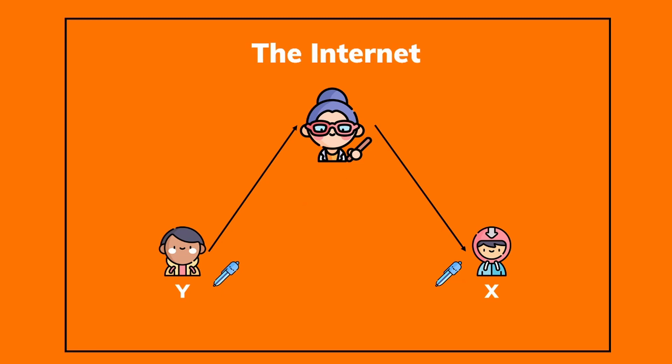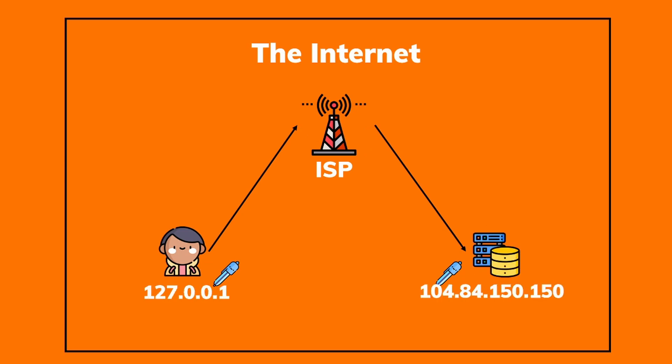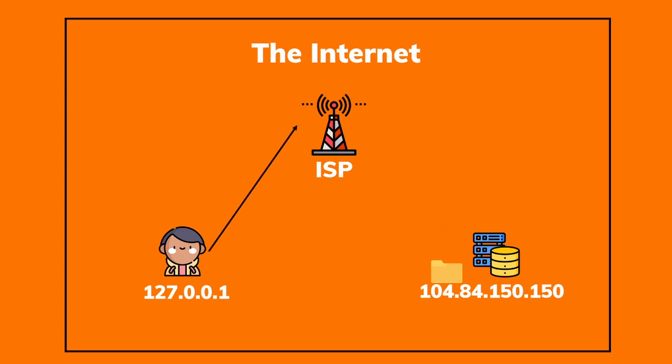This is exactly what happens with the apps you are using daily. The teacher is the ISP, Y is my IP address, X is the app server IP address, and the pen is the data. So what happens here is: whenever you open an app with an internet connection, the app requests data from your IP address to its server IP address, passing through the ISP. The ISP goes to the server with its IP address, gets the data, and sends it back to your IP address.